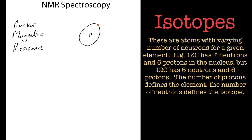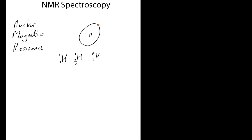Why have I spent so much time talking about nuclei? Because different isotopes of an element have different nuclear spins. Take hydrogen - it has atomic number one and mass number one. Deuterium has atomic number one but mass number two, because it has an extra nucleon - a neutron - in addition to the proton.